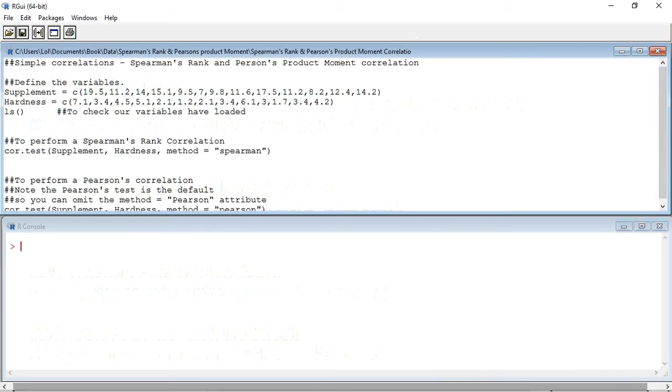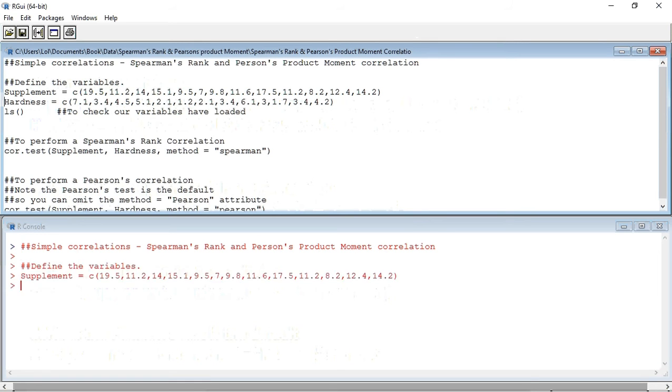So I've loaded the R script, and I'm now going to run it line by line by pressing Ctrl-R. As I press Ctrl-R, the lines of the script appear in the console window as they are run. We are now going to define the variables. Supplement has been defined. Hardness has been defined. How do we know R has actually taken these variables into its memory? This is where we're going to use the list function, ls. And we can see, when we run this test, the names of our two variables appear in the console window.